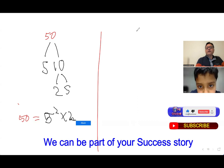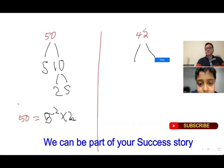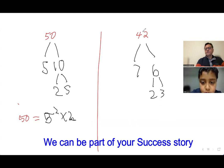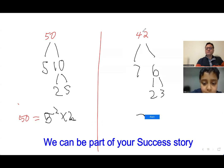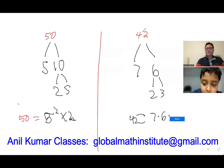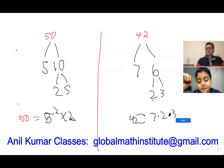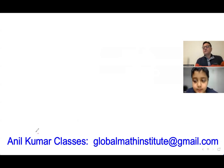Now, prime factorization of 42. First, 7 times 6. Then 6 is 2 times 3. So 42 equals 7 times 2 times 3. You are very familiar with doing prime factorization.